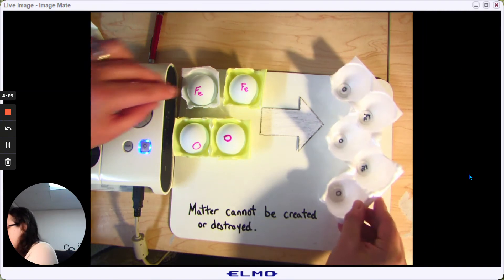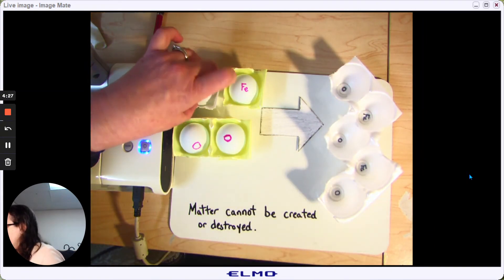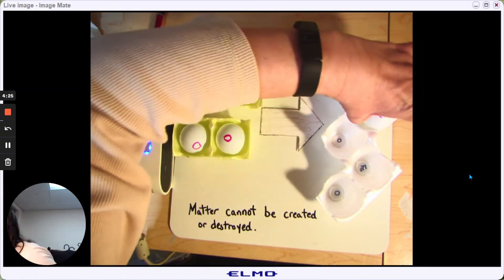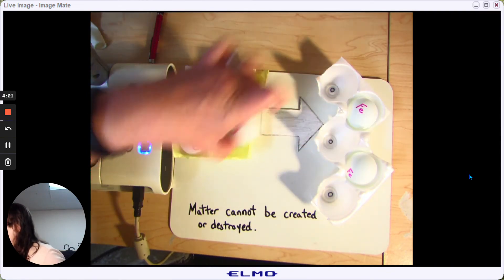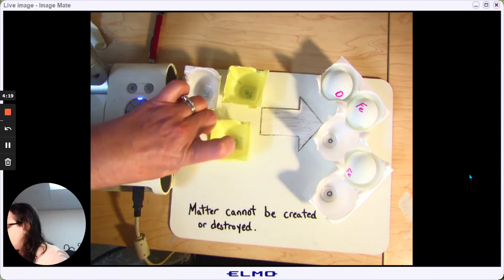here is what a molecule of rust looks like. And so we rearrange the atoms over here to over here, and we put the oxygen over here.